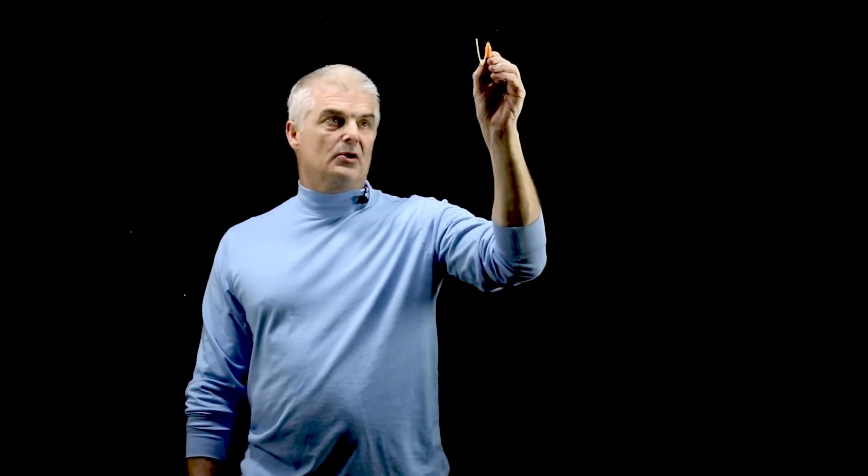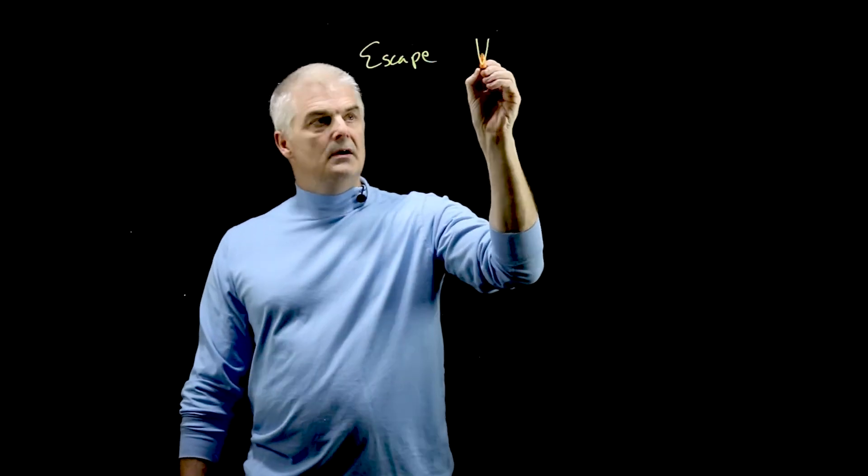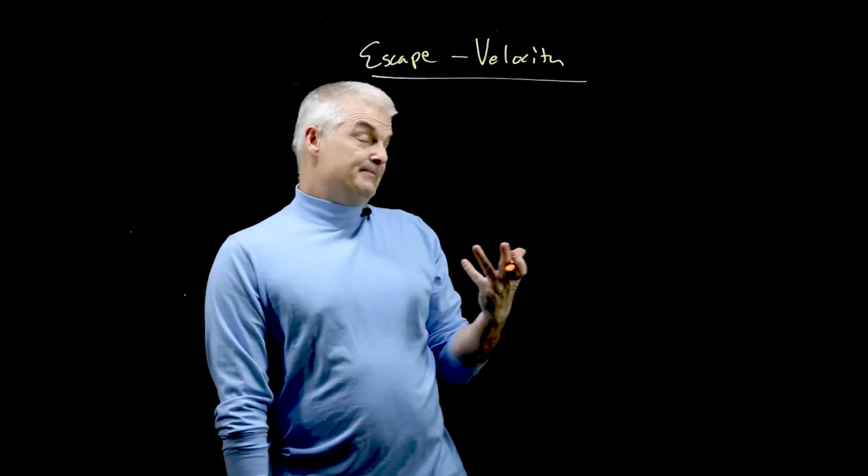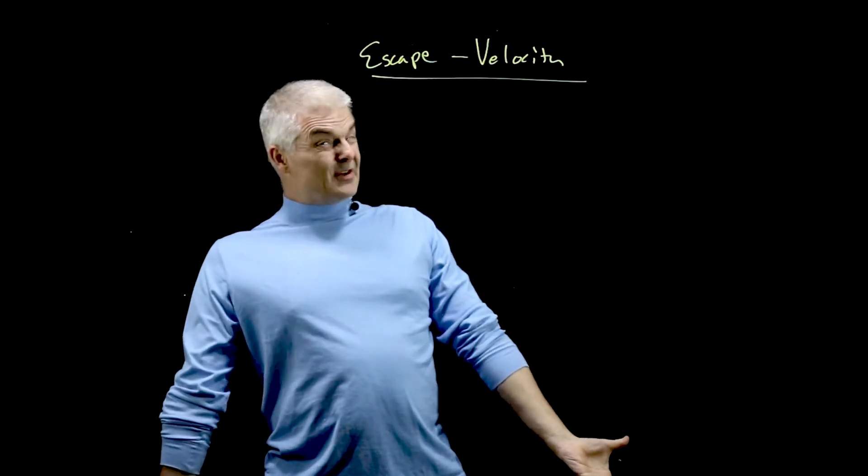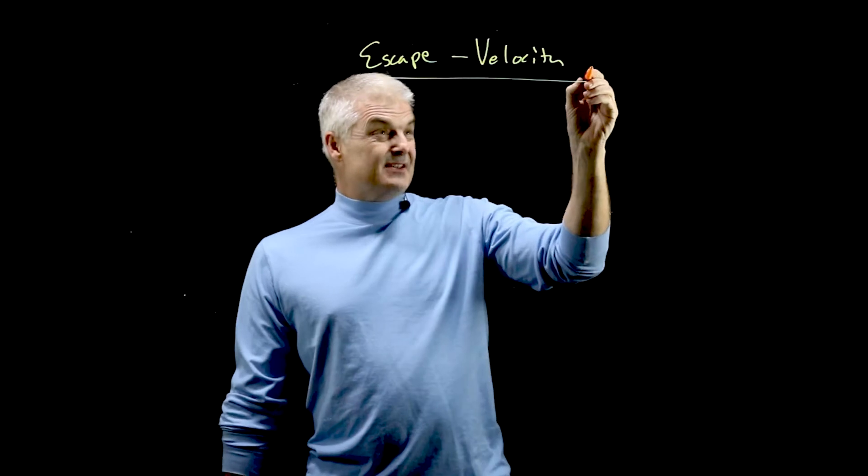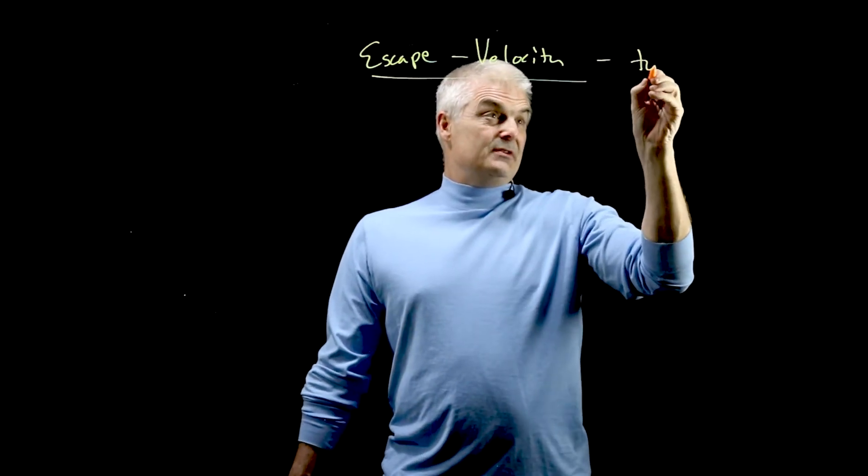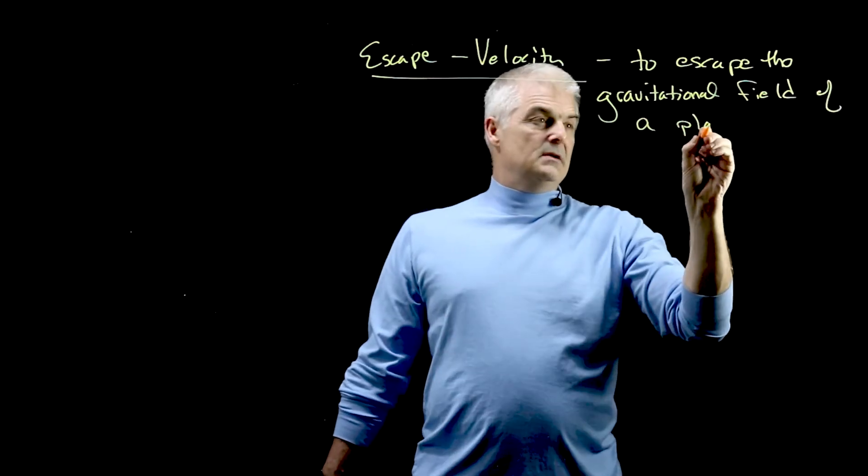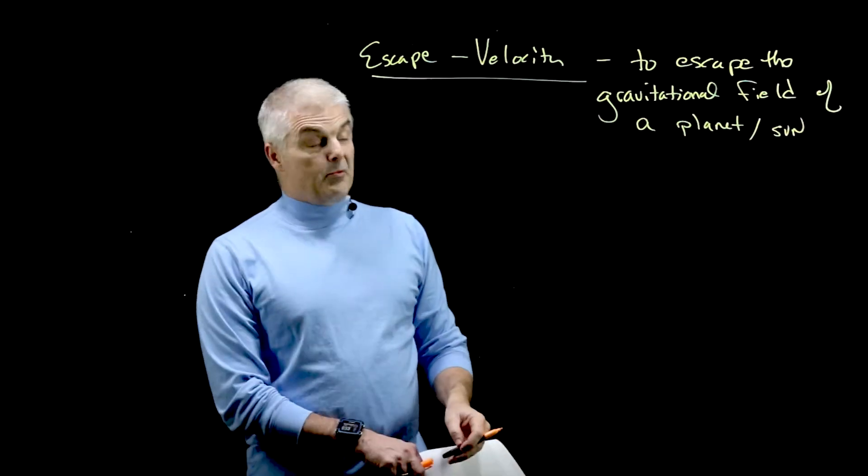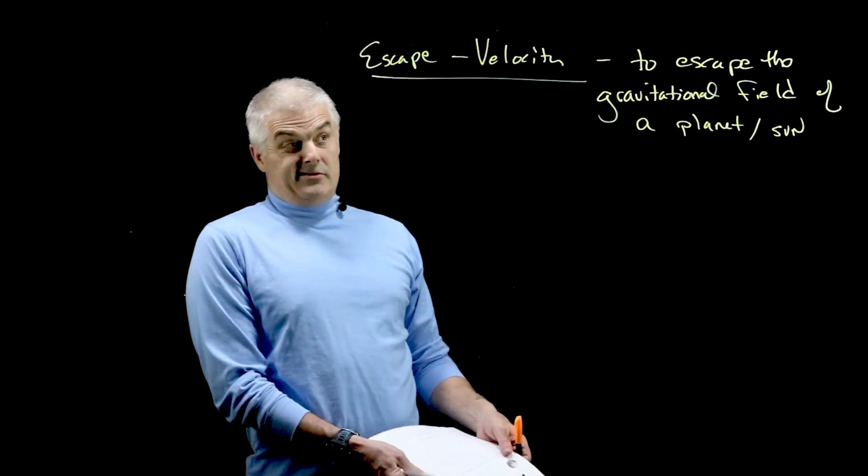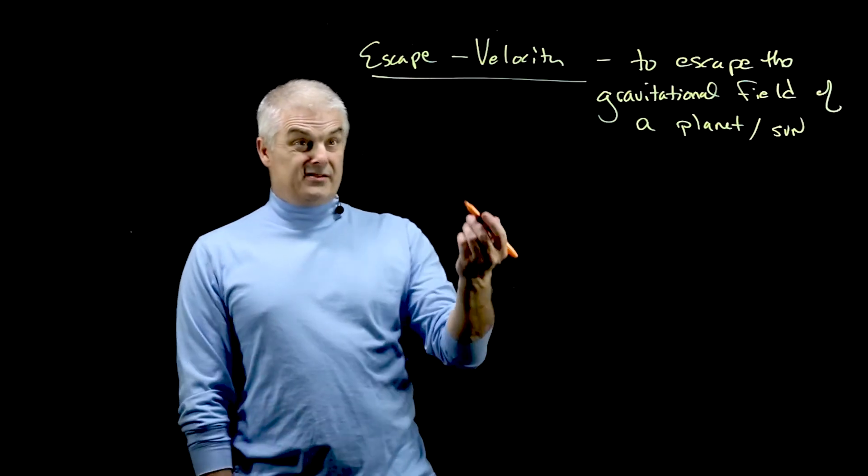One last thing before we finish up this video: I want to talk about a pretty cool concept called escape velocity. Because of gravity, you have to shoot things up at a certain speed or they can't escape. So the escape velocity is the velocity it takes to escape the gravitational field of a planet, a sun, an asteroid, or whatever. And of course, it's a math equation. It's crazy easy.